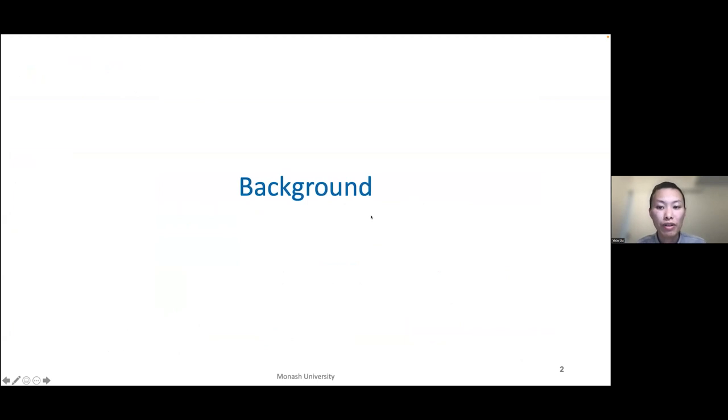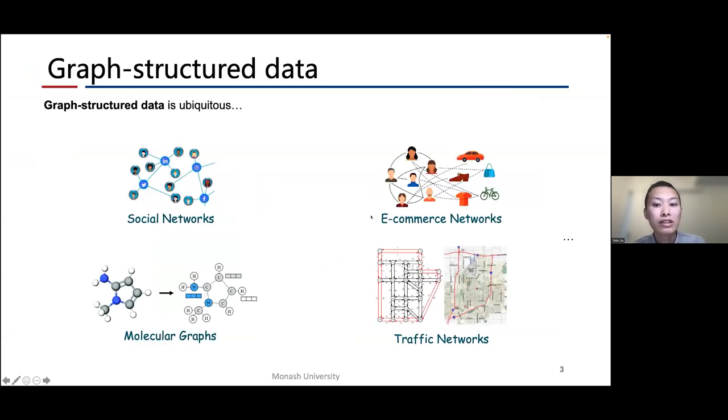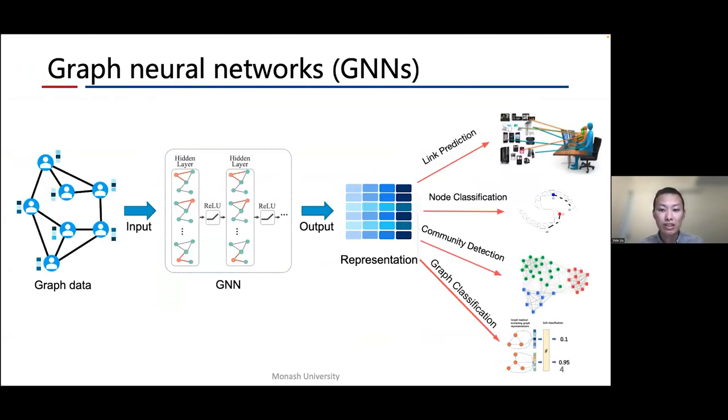Let's start with the background of our work. We know that graph structural data is everywhere in our life, from social networks to traffic networks. Recently, graph neural networks have become a mainstream solution for deep learning on graph structural data. In practice, GNNs can learn informative representations from nodes or graphs and be applied to various downstream tasks such as link prediction or graph classification.